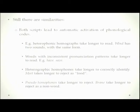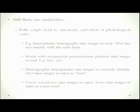There are some similarities between Chinese and other scripts. Both kinds of scripts lead to automatic activation of phonological codes. Because there is a phonological radical in Chinese, it automatically helps generate a pronunciation. Heterophonic homographs — things that are written the same way but sound different, like 'wind' (noun) and 'wind' (verb) — take longer to read in both alphabetic scripts and Chinese.